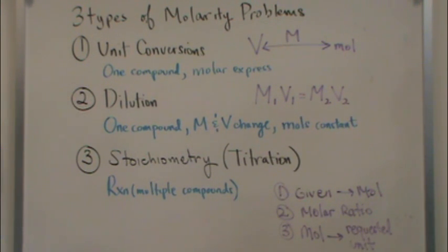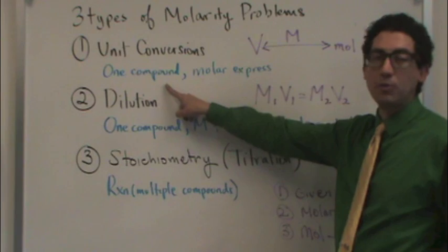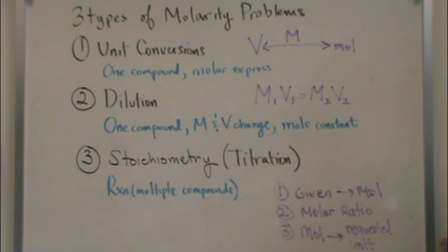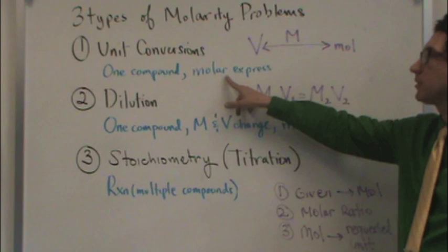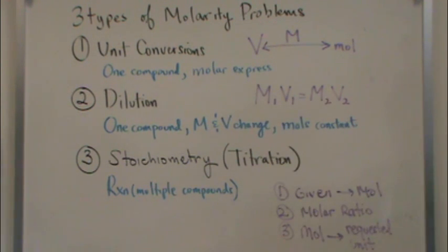Now, how do you recognize this type of problem? Well, there's going to be one compound of interest. That'll be the compound you're focusing on. And it'll use a molar express. Basically, another word for unit convergence, where we're going from one unit to another requested unit and going through molarity or using molarity somehow.